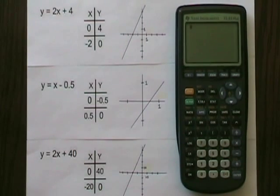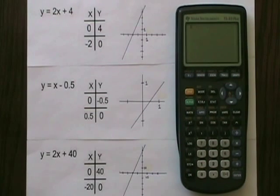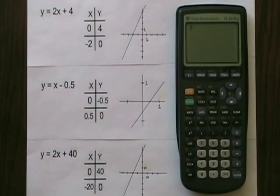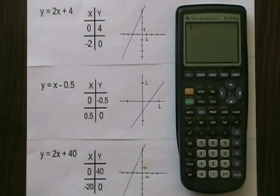Here on the left, I have three straight line equations. Each one has a small table of values showing only the x-intercept and y-intercept. I also have three small hand-drawn graphs.